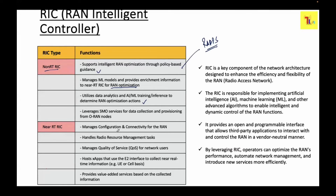The Near-RT RIC manages configuration and connectivity for the RAN. It is connected to all gNodeB nodes — CU-CP, UP, and DU — using the E2 interface, selecting nodes via E2AP setup requests. Covered under Working Groups 2 and 3, it handles radio resource management tasks, manages quality of service for network users, and is based on x-Apps that use the E2 interface to collect near-real-time UE and cell-based information.